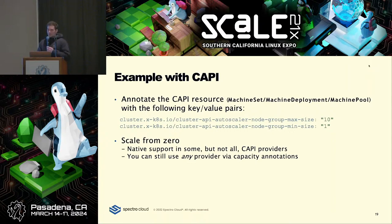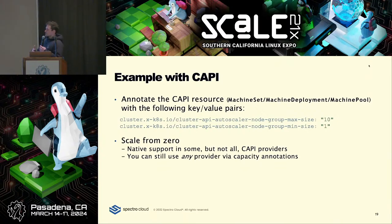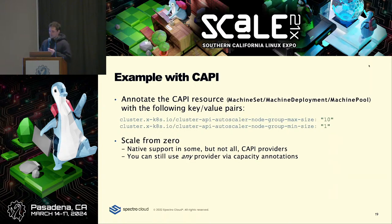Some CAPI providers have native support for scale from zero. But even if they don't, you can add additional capacity annotations that tell Cluster API the size of the node that will get provisioned — in terms of CPU capacity, memory capacity, and storage capacity. When you annotate your machine set with all of that information, Cluster API has everything it needs to understand when to add and remove nodes.